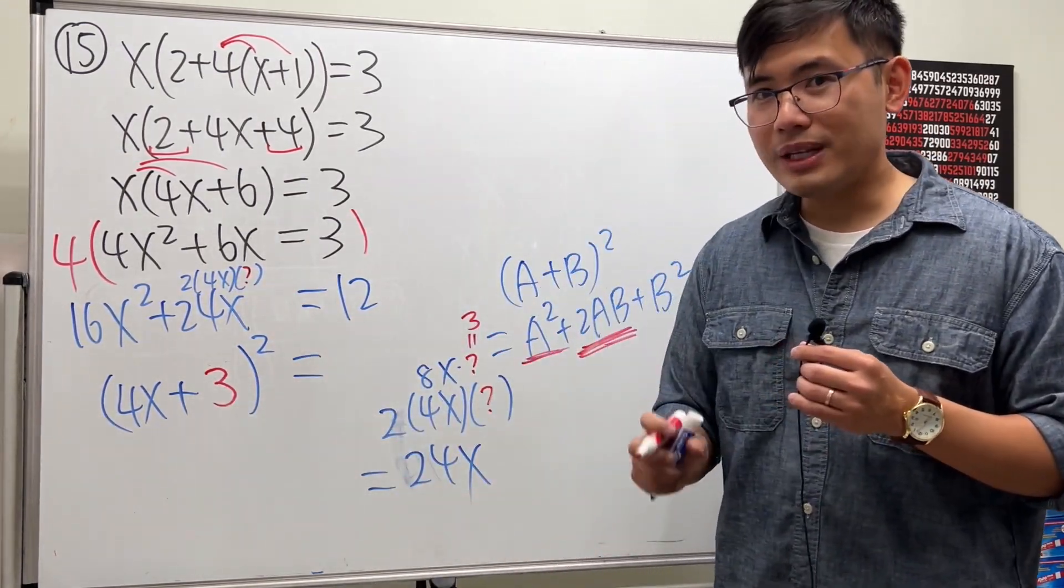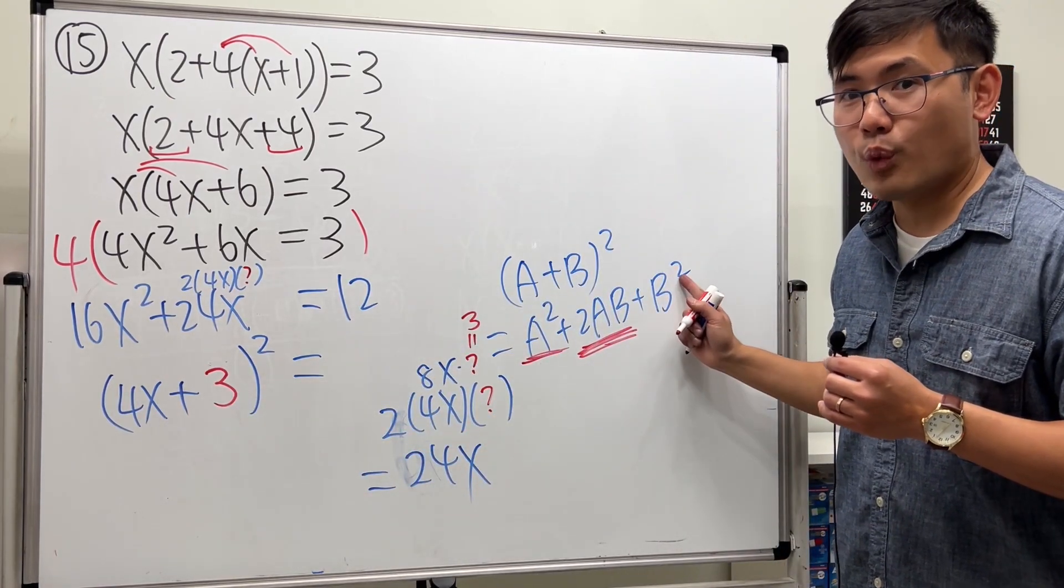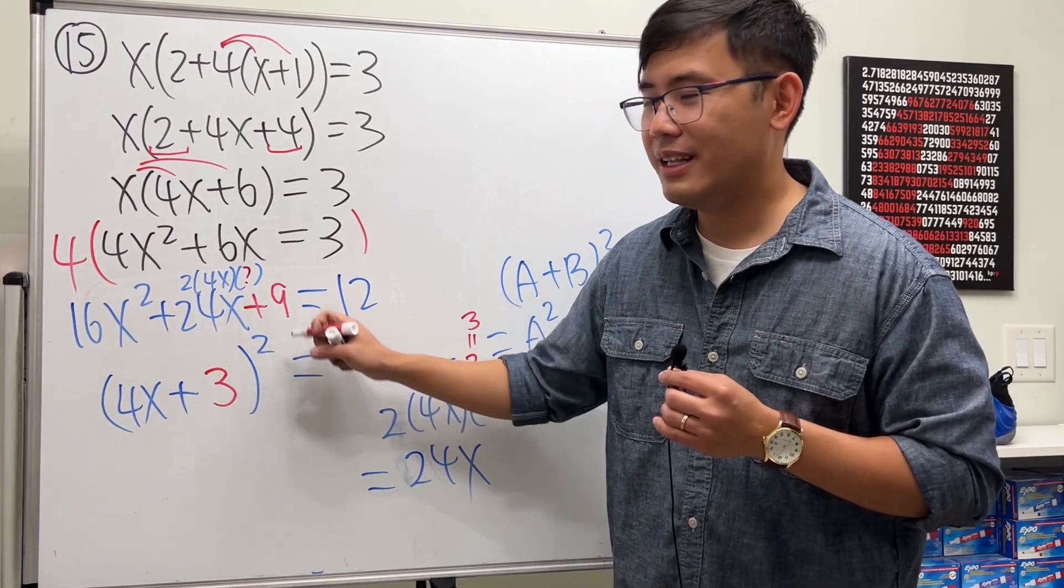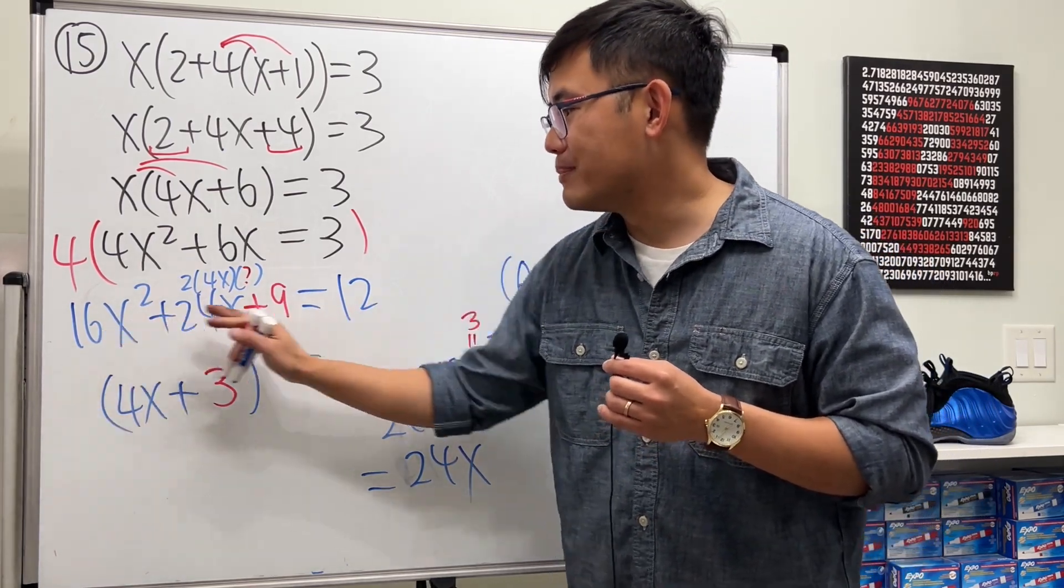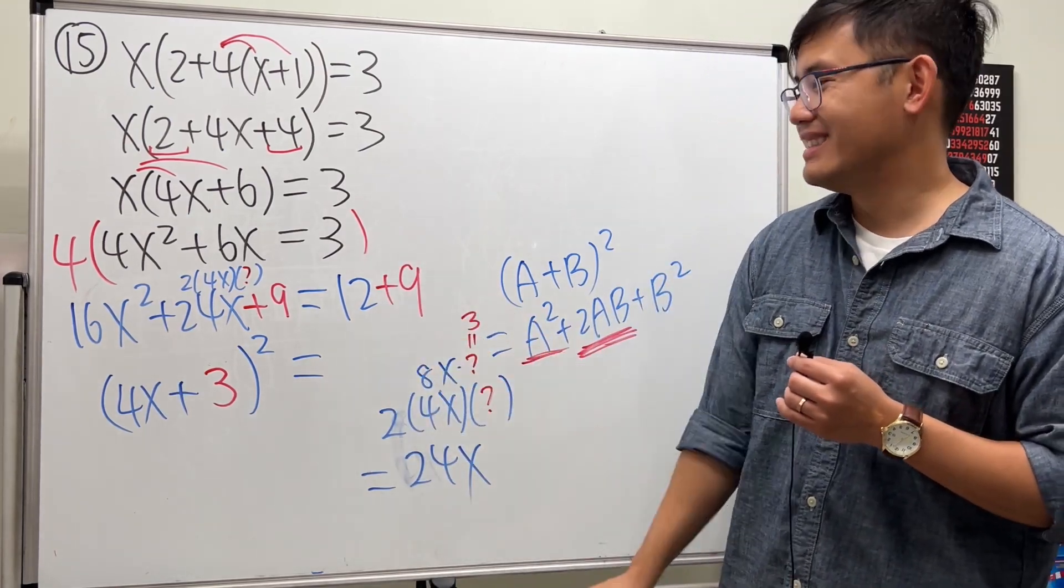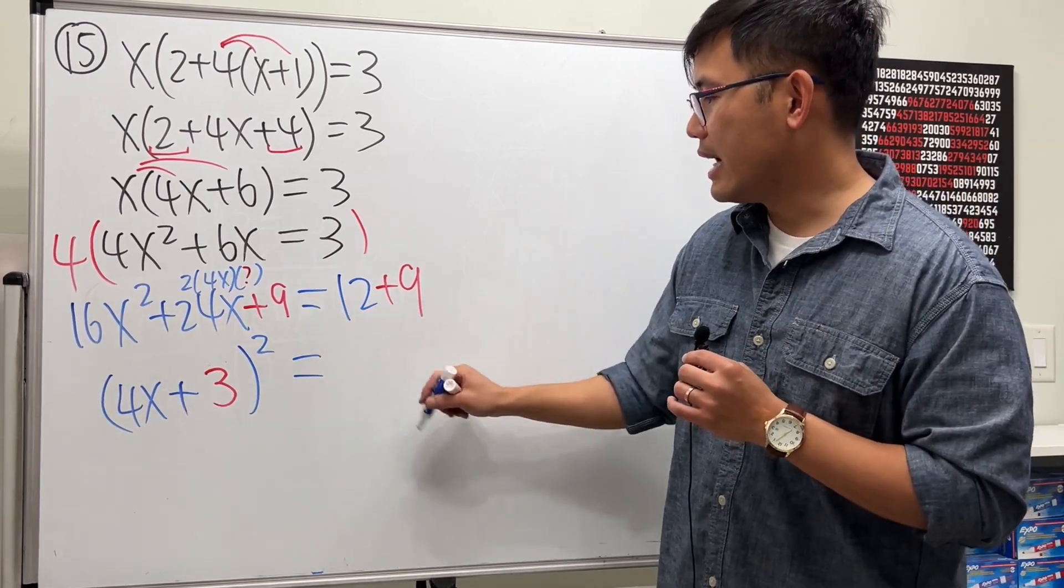So what that means is when we have to do that, we have to have 3², so that means we will have to add 9 here. But I cannot just add 9 on this side only, I will also have to do it to the other one. Alright, so that's how it works. 12 plus 9 is 21.